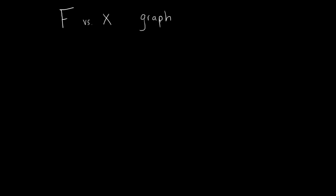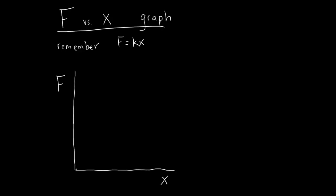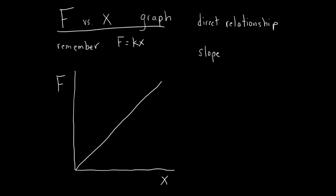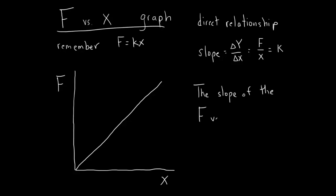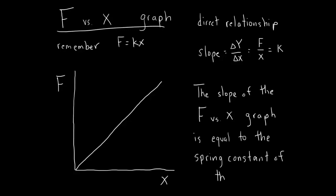Next we'll take a look at the graph of force versus change in spring length. Since we know f equals kx, we know that there is a direct relationship between force and change in spring length. The slope of a graph can be calculated by taking the change in the y value and dividing by the change in the x values. In this case, that would be dividing a force by a change in spring length, which gives us the spring constant. This means that the slope of the force versus change in spring length graph is equal to the spring constant of that spring.